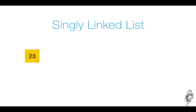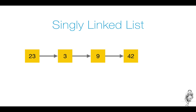The first item of the list is usually called the head. The last item of the list is the tail of the list. For every new item, we create a new node and link to it from the last element of the list. So a linked list is a dynamic data structure that can hold any number of elements as long as enough memory is available.